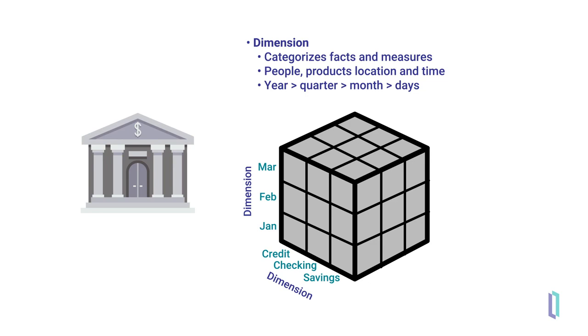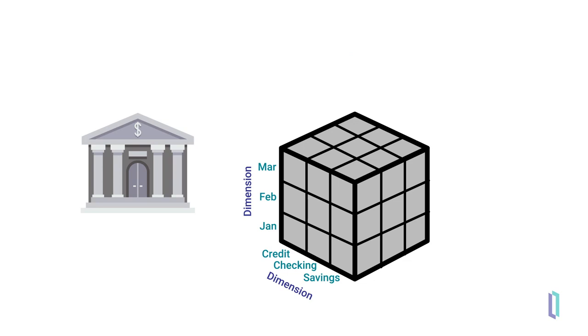Dimensions allow you to define ways to see, order, or filter data. In addition to dimensions, cubes contain measures which are specific pieces of data. Measures tracked by a bank might include activities like the number of new accounts and numerical information such as loan amounts.